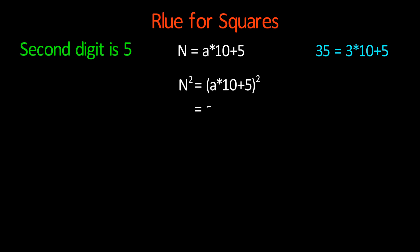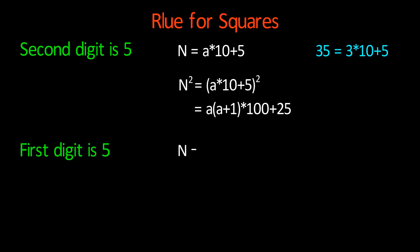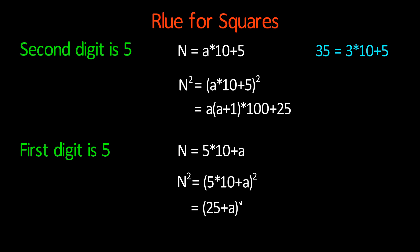That equals a times (a plus 1) times 100 plus 25. For numbers whose first digit is 5, n equals 5 times 10 plus a, and n squared equals (5 times 10 plus a) squared, which after solving gives (25 plus a) times 100 plus a squared. By putting in the value of a you can find the square of any number whose first or last digit is 5.